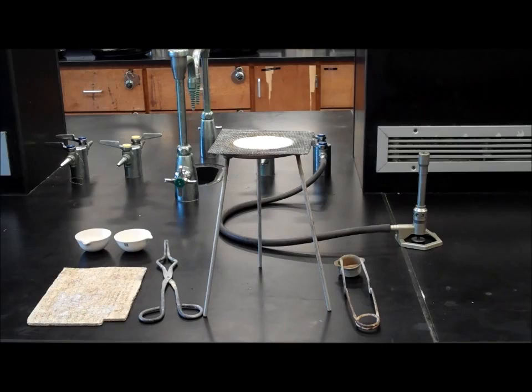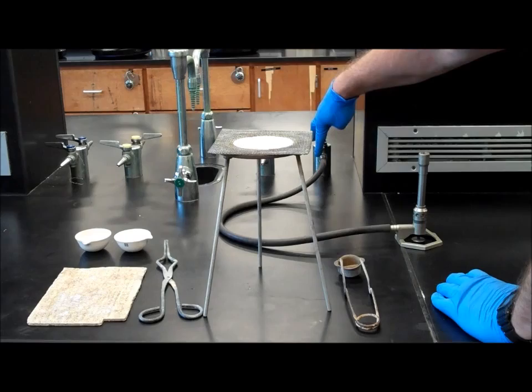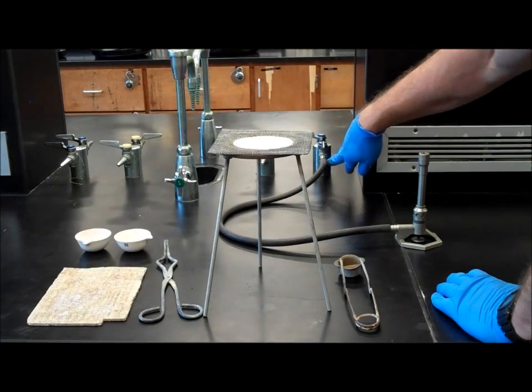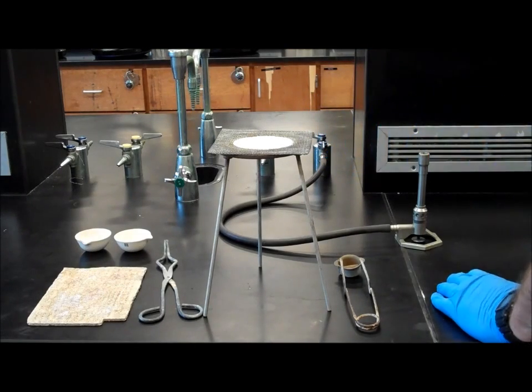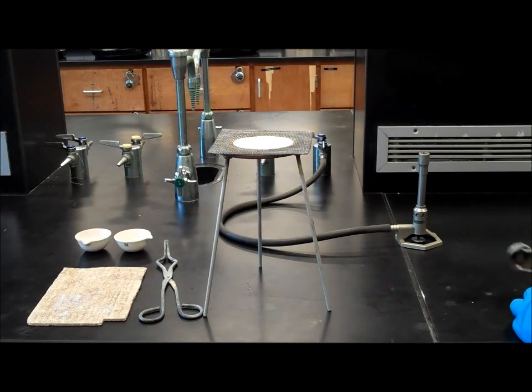The first thing you will do is light your Bunsen burner using a striker. Turn your gas switch on to where it's parallel with the nozzle. You should hear gas slowly seeping out. Take your striker.